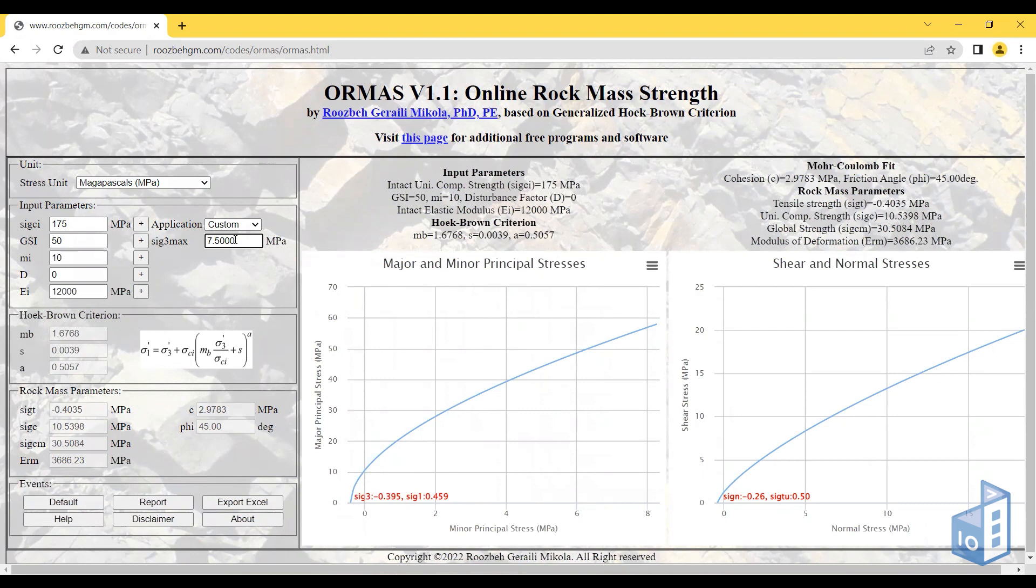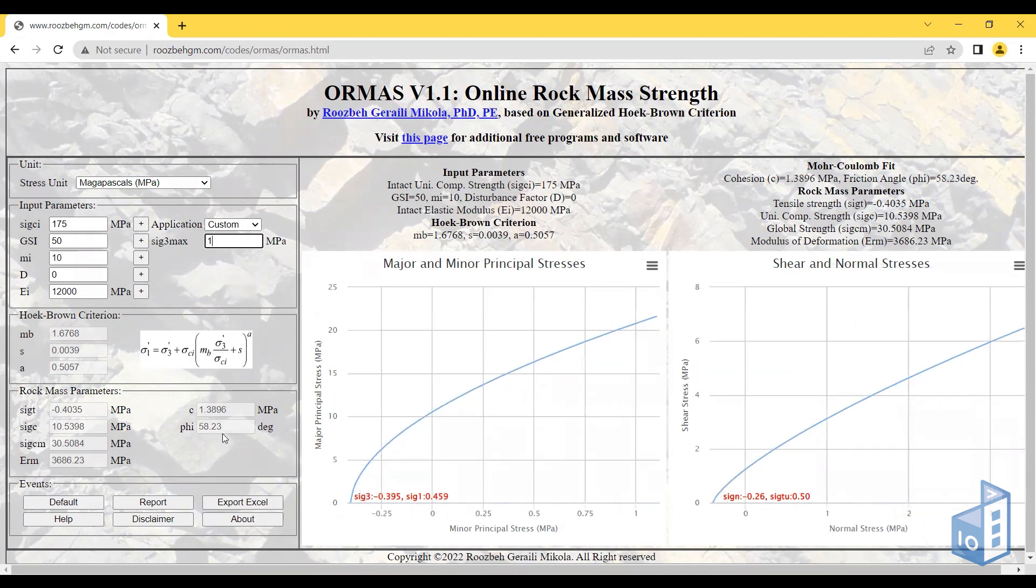If I change that to something smaller, I have a different c and a different friction angle. You can see this changes because the envelope is non-linear. The smaller the sigma 3, the steeper the equivalent linearized envelope is, which means a higher friction angle and lower cohesion.